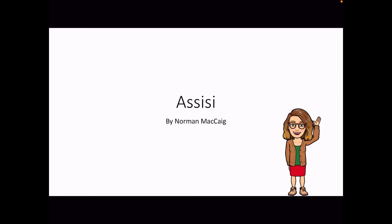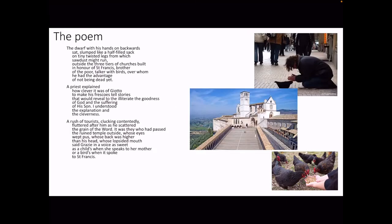Hi, welcome. So this is the video on Assisi by Norman McCaig with me, Miss A.B. We're going to go through the poem, through all the key themes and ideas and everything you should need to know for National Five. So we're going to start off by just reading the poem through.